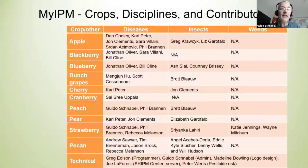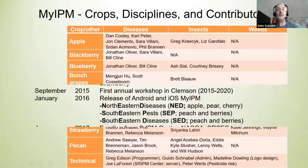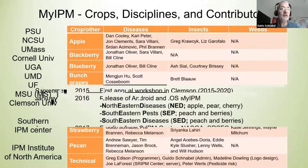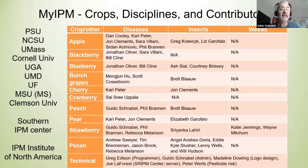That led to the merger of MyIPM. With funding support from the Southern Region IPM Center, the North American Strawberry Grower Association, and the Southern Region Small Fruit Consortium, we merged those three into one single app. That single app now contains several different crops: apple, blackberries, blueberries, bunch grapes, cherries, cranberries, peach, pear, strawberries, and even pecan. Over time more crops were added and more disease and insect specialists joined the project. Now we've got more than a dozen specialists working on this. We meet once a year for a workshop here in Clemson to update the app. People are from PSU, NCSU, University of Massachusetts, Cornell, UGA, Maryland, Florida, Mississippi, and Clemson University. The Southern IPM Center is hosting the app, and the IPM Institute of North America with Peter Wards is involved, letting us use their pesticide risk data.